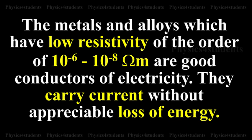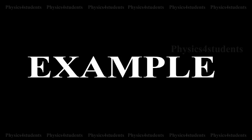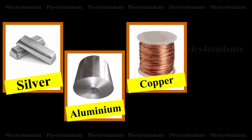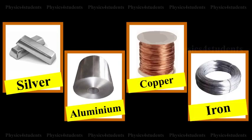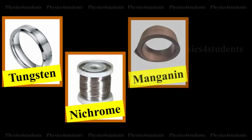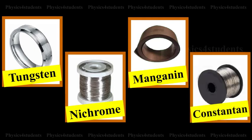They carry current without appreciable loss of energy. Examples: Silver, Aluminium, Copper, Iron, Tungsten, Nichrome, Manganin, and Constantan.